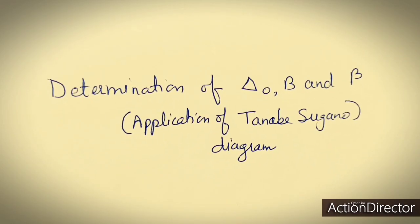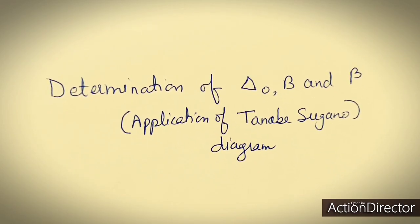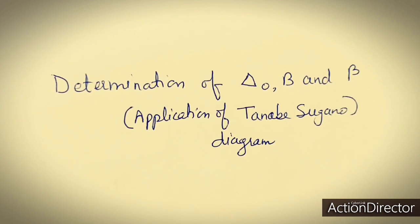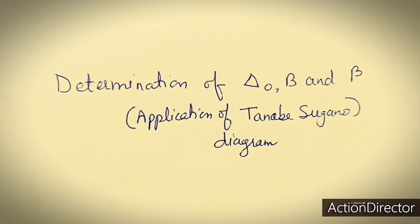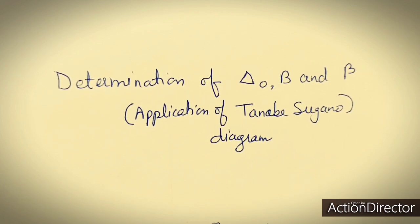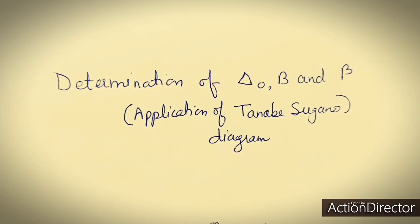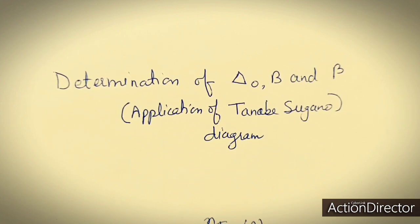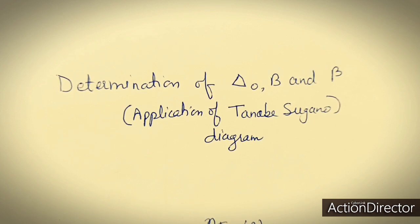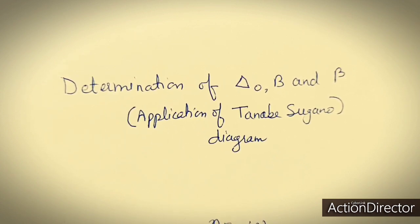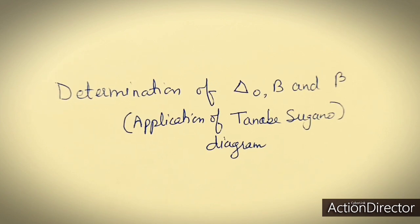Dear students, in this lecture I will cover the calculations regarding delta O, B, and beta that are applications of the Tanabe-Sugano diagram. The main application of the Tanabe-Sugano diagram is that it is helpful in the determination of crystal field splitting energy, the Racah B parameter, and the nephelauxetic ratio. We will see how we can calculate these three special values with the help of this diagram.